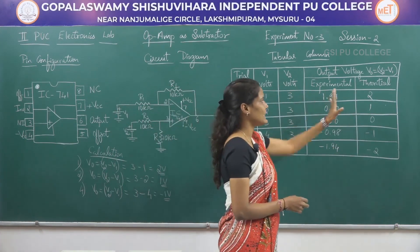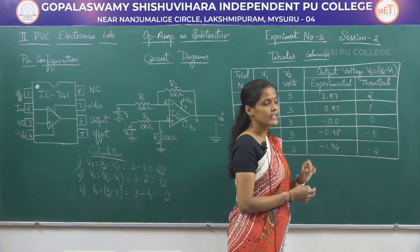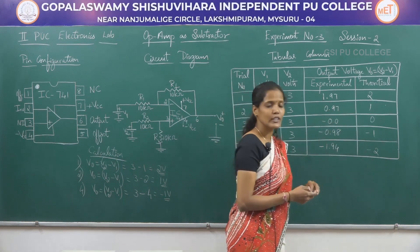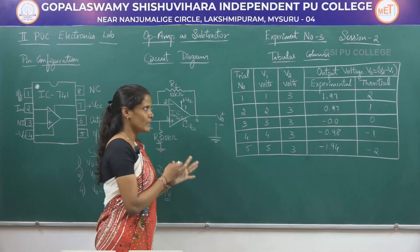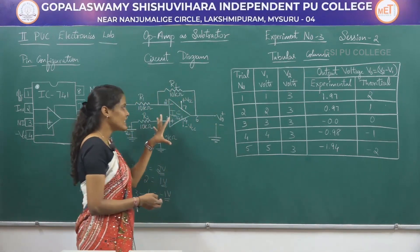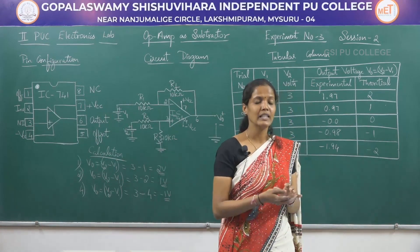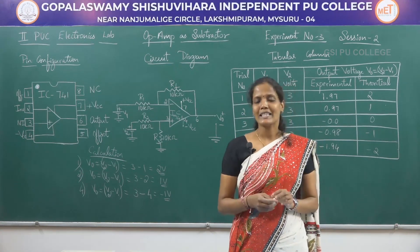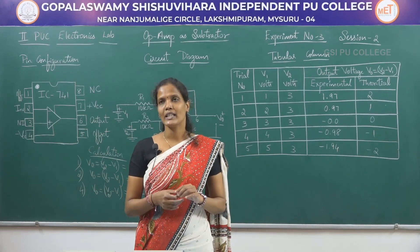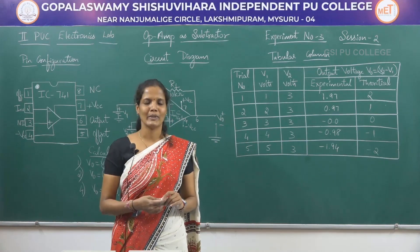Looking at the experimental and theoretical columns, the readings are almost matching — for the first trial, the experimental value is 1.97 and the theoretical output voltage is also approximately 2 volts. By comparing the experimental and theoretical output voltage columns, we can conclude that we have successfully constructed op-amp as a subtractor circuit and verified that the values match. This completes the third experiment, which had two sessions: op-amp as an adder in session one, and op-amp as a subtractor in this session. In the next session, I will be coming with a new experiment. Until then, take care. Bye-bye.